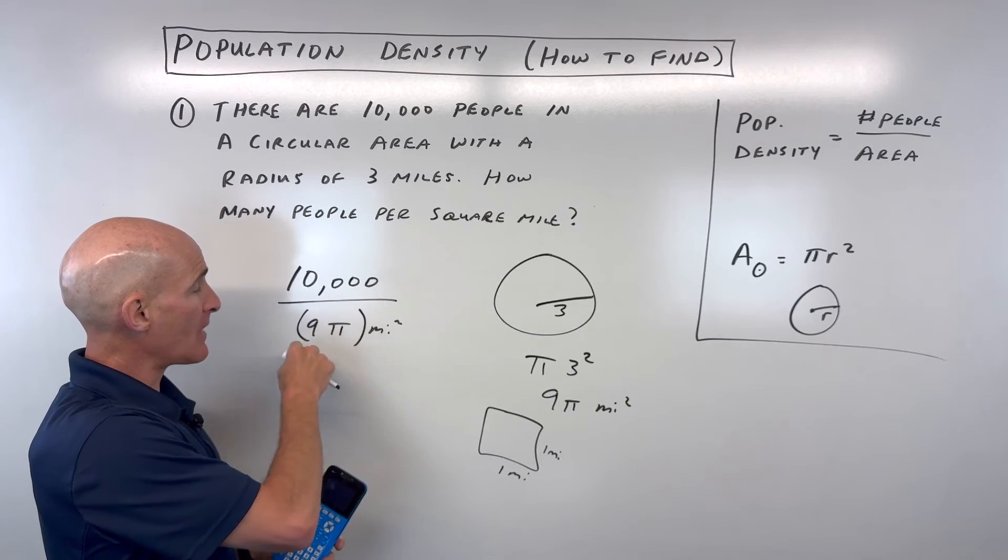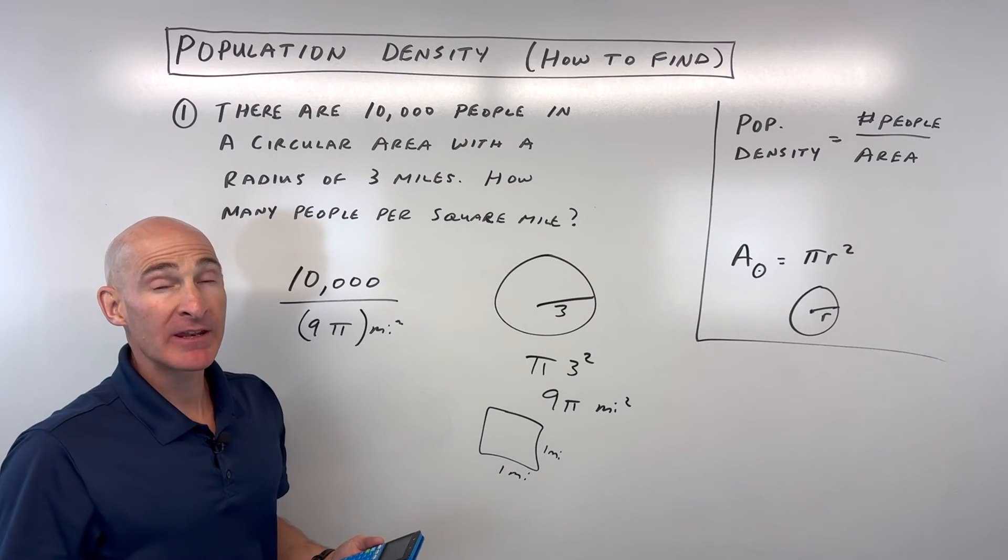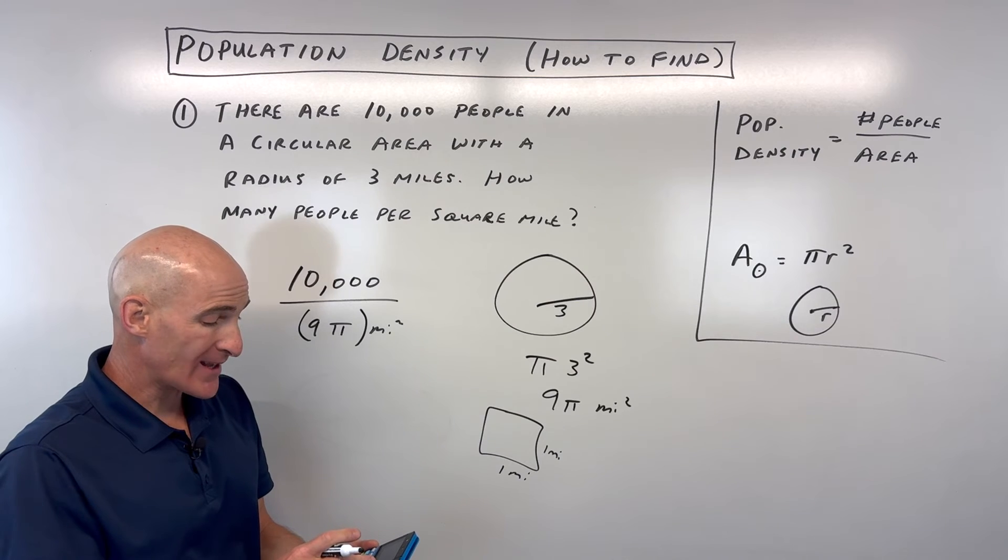Alternatively, you can figure out what nine pi is, get an approximation, and then do 10,000 divided by that number. So I'm getting 353.67.